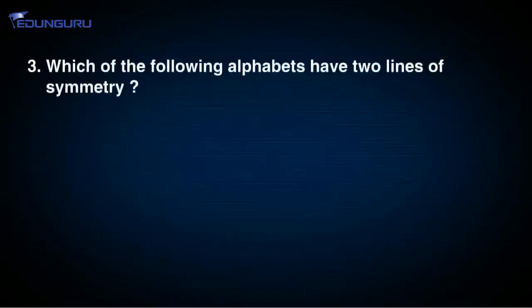Question number 3. Which of the following alphabets have two lines of symmetry? Options are A. Letter A, B. Letter F, C. Letter H, D. Letter Y.